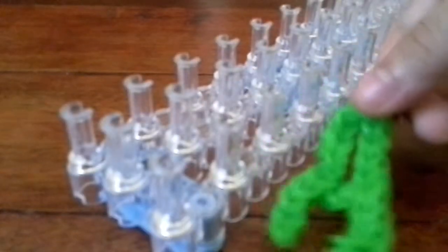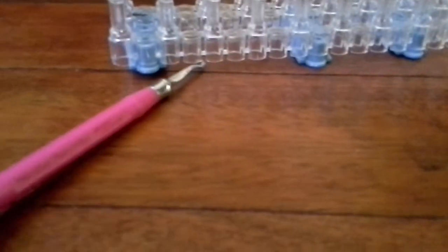Okay, so I'm gonna make a letter A charm on the loom like this. Let's get started. What you need is your hook, rubber bands, and you don't need an S-clip or C-clip.